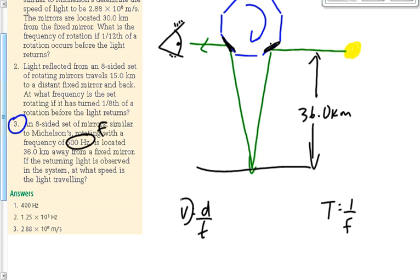Now, we're looking for V. We're looking for the speed of light. In order to get the speed of light, we need the distance, which we have. It's 72,000 meters. First of all, convert that to meters. Second of all, why did I double it?